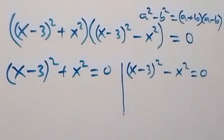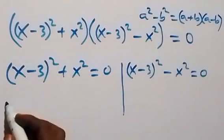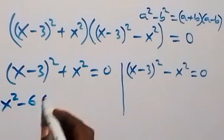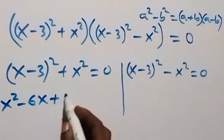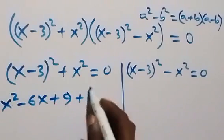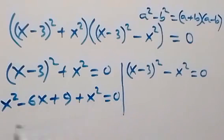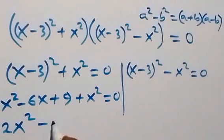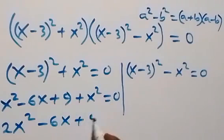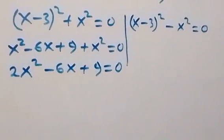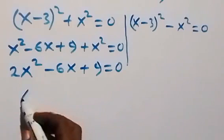We solve each side. On the first side, expanding gives us x squared minus 6x plus 9 plus x squared equals 0. Then we have 2x squared minus 6x plus 9 equals 0.